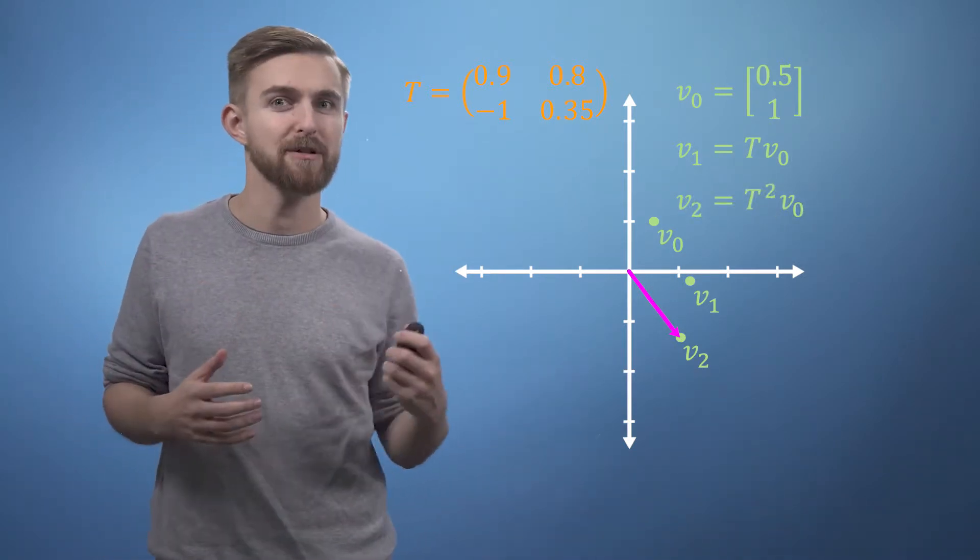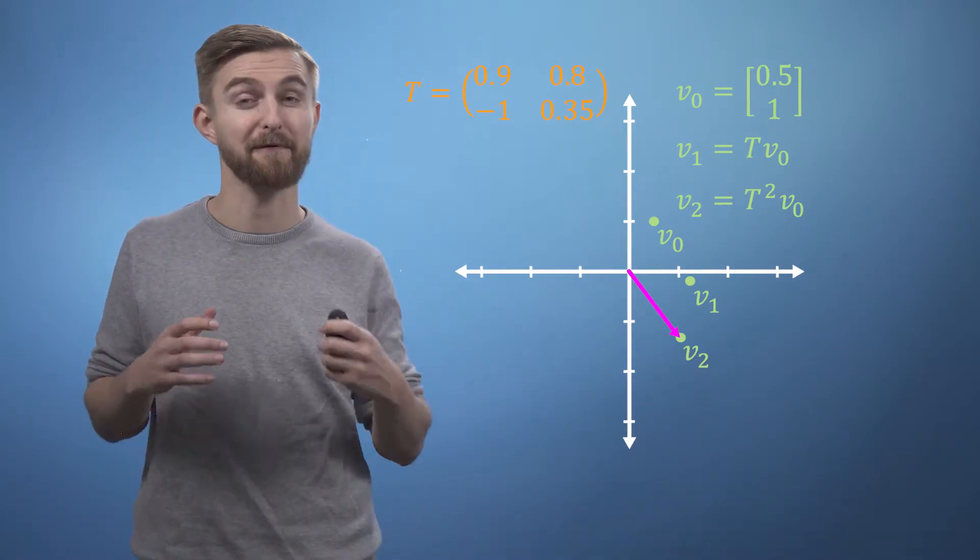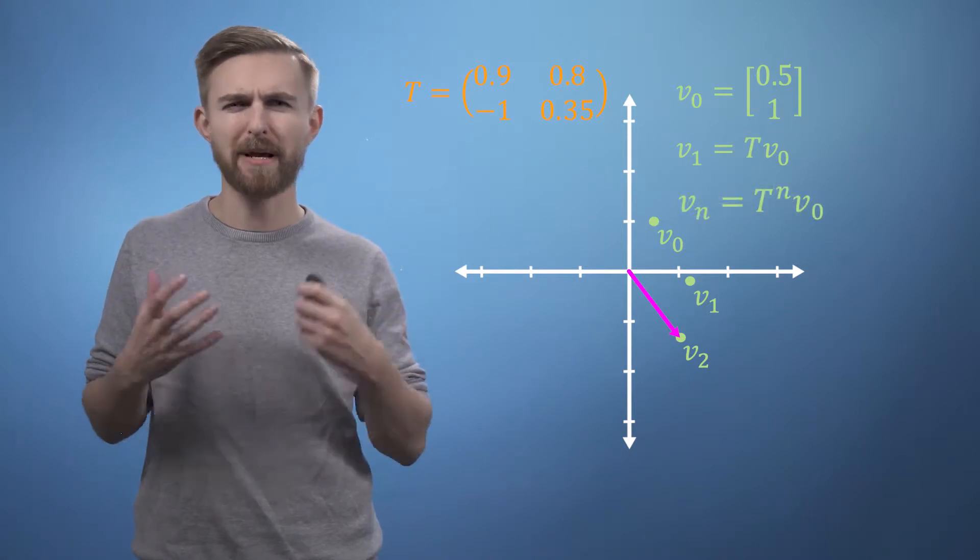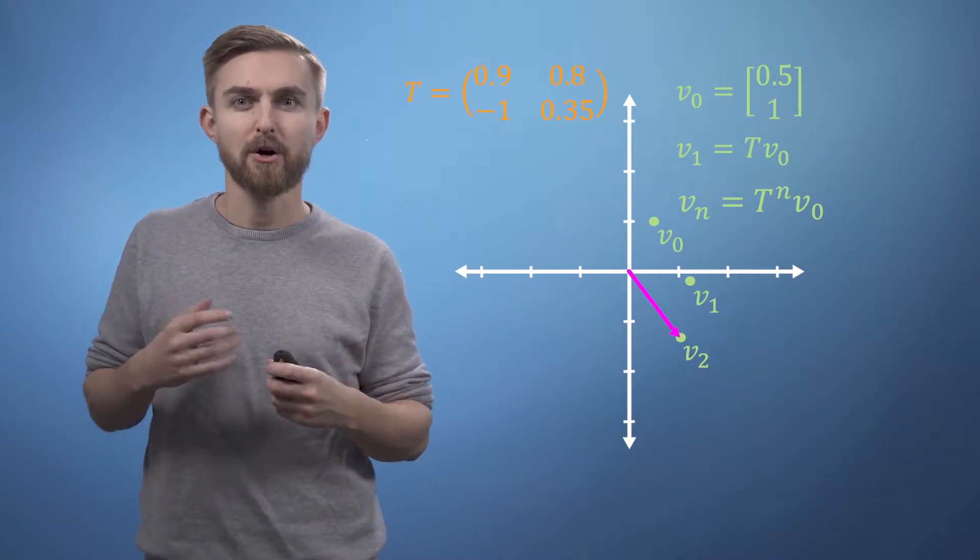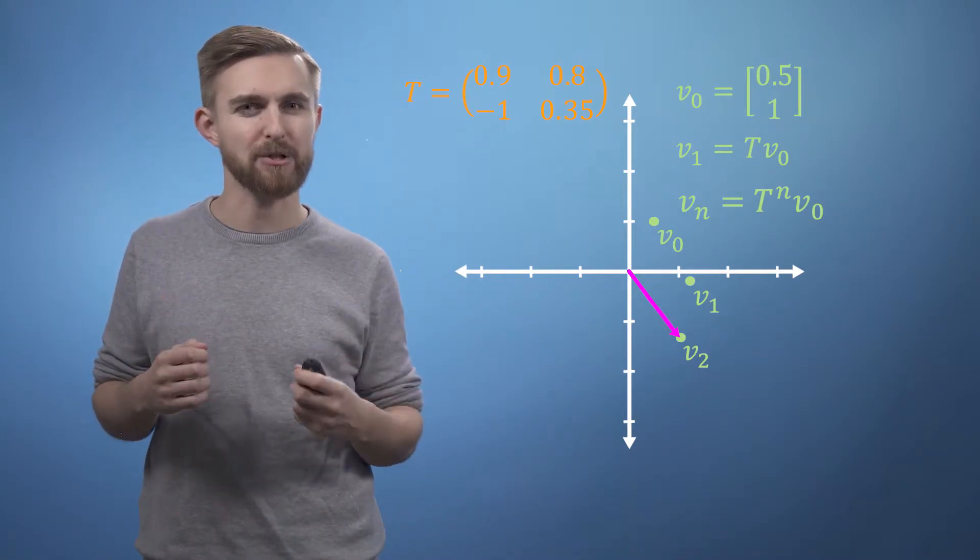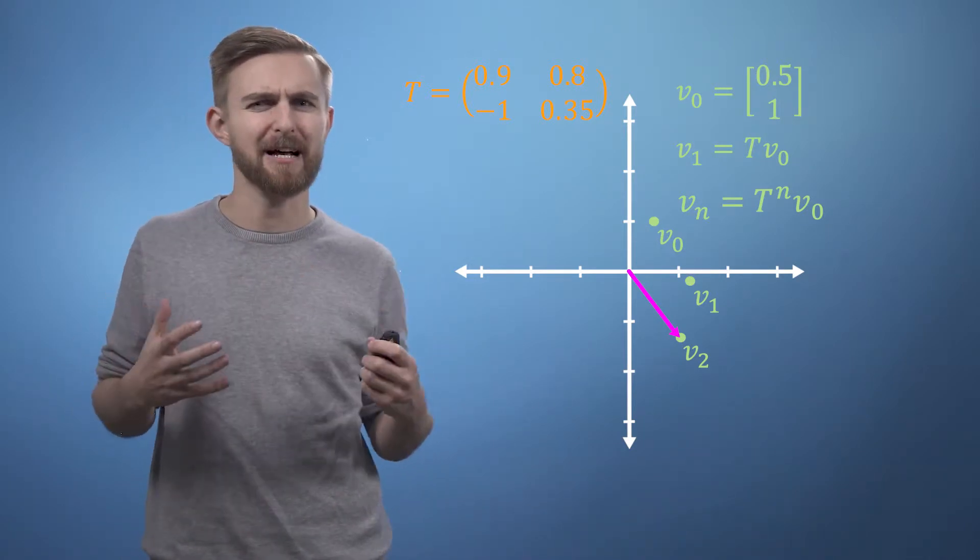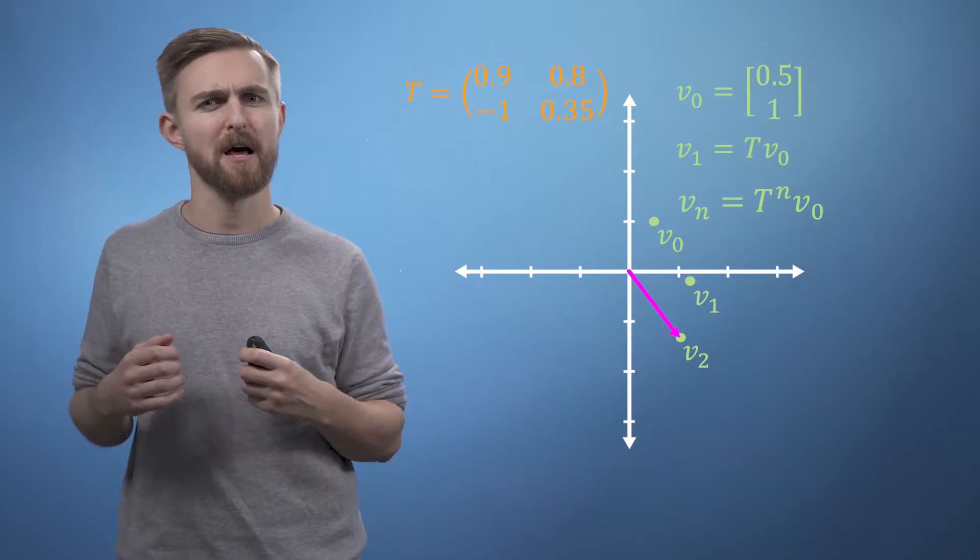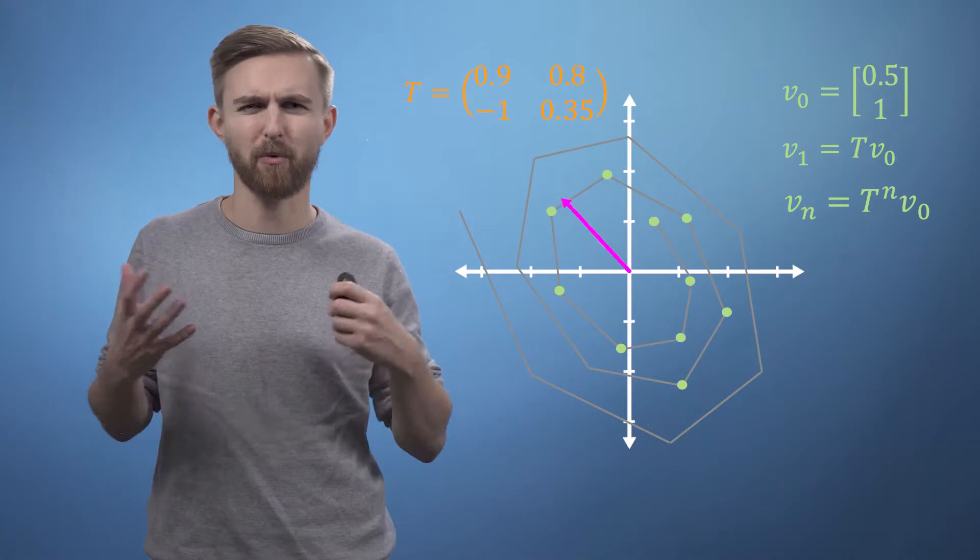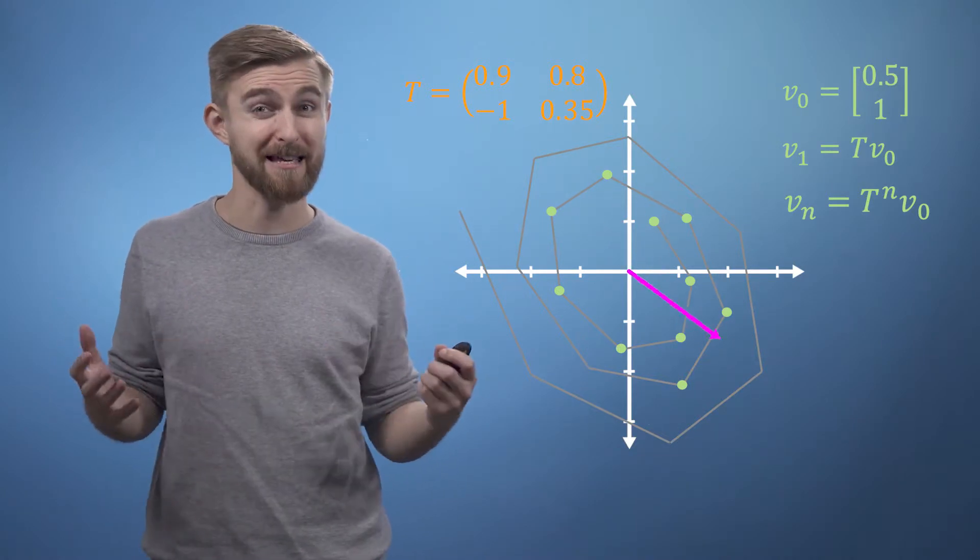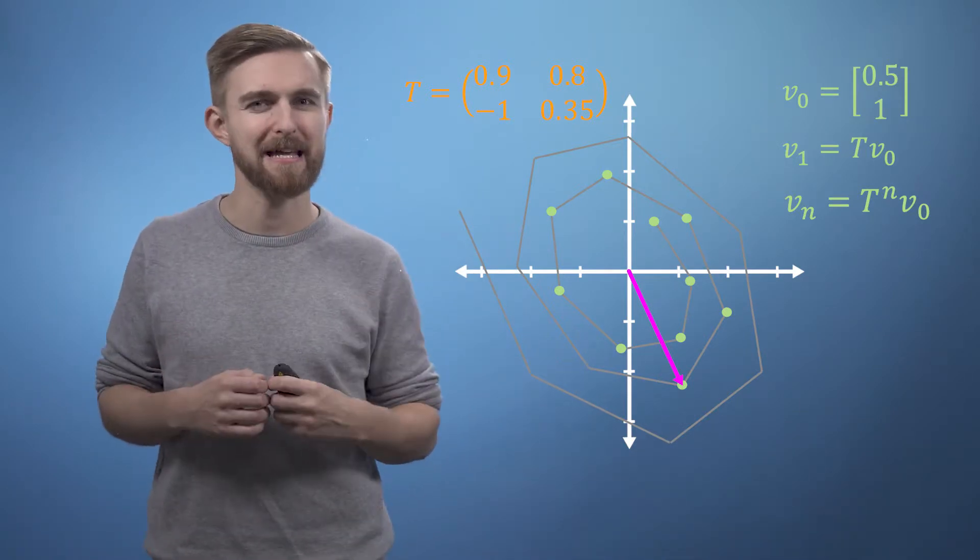Now imagine that we expect this same linear transformation to occur every time step for n time steps, where we can write vn is T to the power of n times v0. You've already seen how much work it takes to apply a single 3D matrix multiplication. So if we were to imagine that T tells us what happens in one second, but we'd like to know where our particle is in two weeks from now, then n is going to be around 1.2 million. We'd need to multiply T by itself more than a million times, which may take quite a while.